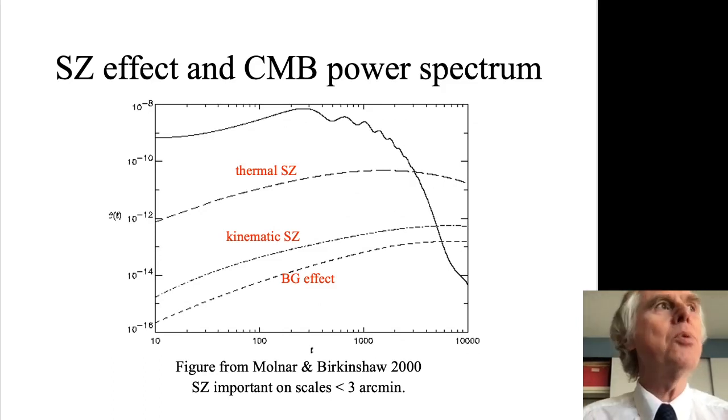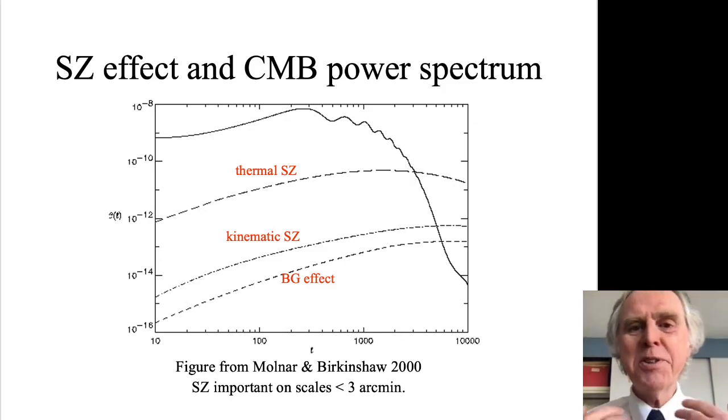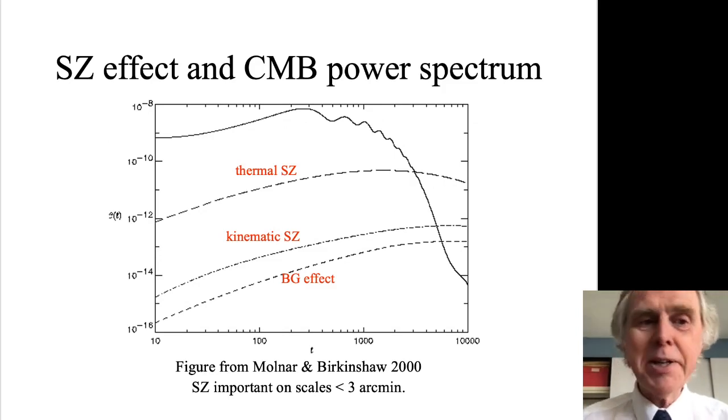That is what you get if the clusters are moving relative to the microwave background radiation. Our galaxy is moving around 600 kilometers per second relative to the average microwave background radiation. You'd expect all clusters to be moving at some speed, maybe 100 or 200 kilometers per second. That will give you this kinematic SZ effect signature. It has a different spectrum, so it can be distinguished from the thermal effect, but also contributes power.